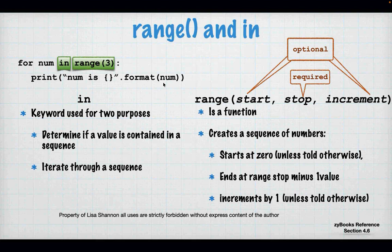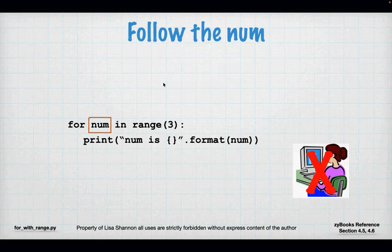The `in` keyword has a couple of purposes: it determines whether a value is contained in a sequence and it helps iterate through the sequence. You'll be using `in` again when we get to lists and dictionaries. For right now, `in` is used to tell us whether the value of `num` is inside the sequence created by range. Let's follow the number through the two lines of code — you don't need Professor Lisa for this.